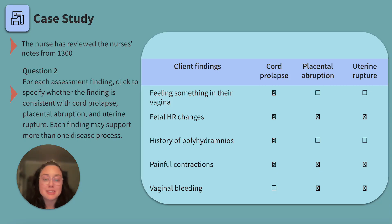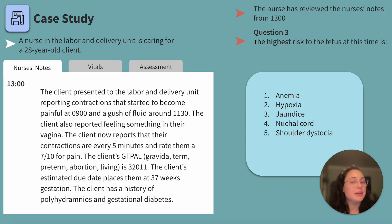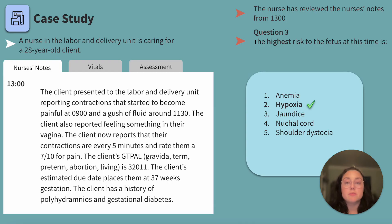Now that we have an idea of what's going on, let's act fast. The highest priority to the fetus at this time — noting the word 'highest' — is: anemia, hypoxia, jaundice, nuchal cord, or shoulder dystocia? If it is cord prolapse, blood flow is interrupted — hypoxia. With interrupted blood flow to the baby, we expect fetal hypoxia. Fetal circulation heavily relies on oxygen-rich blood from the client, and frequent cord compression means decreased blood flow to the baby, which is why fetal heart rate changes are evident on assessment.